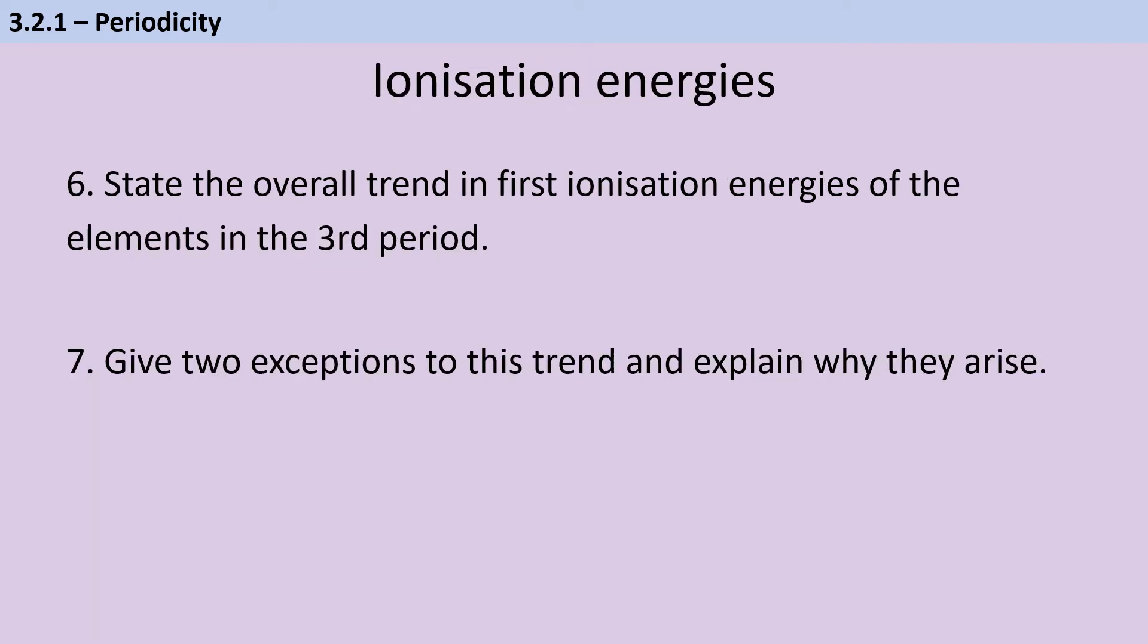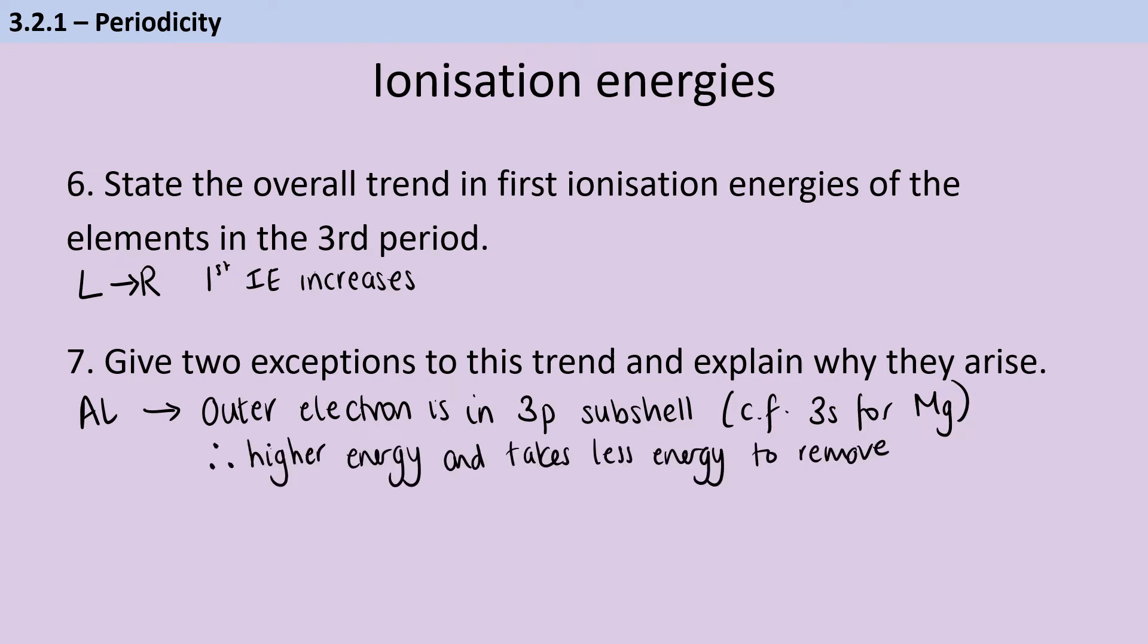As you go left to right across the periodic table, the first ionization energy increases. There are two exceptions. The first is aluminum, where we're starting a new subshell. Specifically, we're starting the 3P subshell as opposed to the 3S subshell. It's important that you specify which subshell electrons are now being added to. The 3P subshell is a higher energy subshell compared to the 3S, and therefore it takes less energy to remove electrons from that subshell.